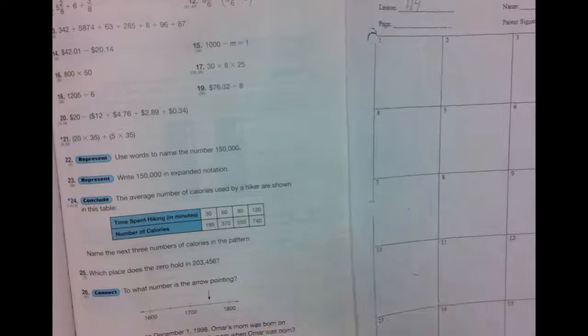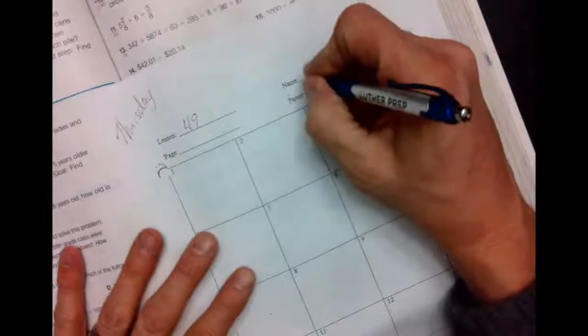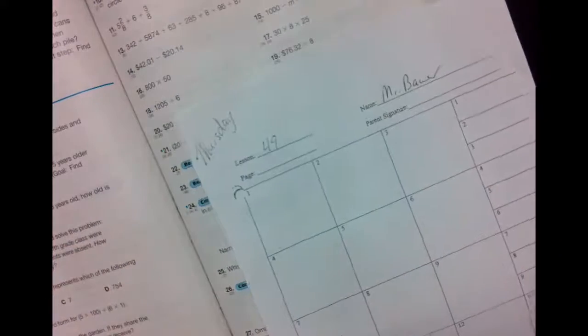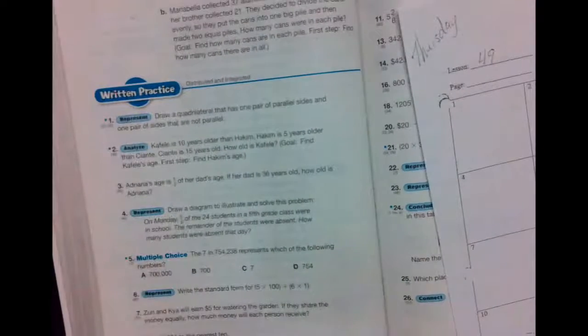Alright guys, lesson 49. Let's start with our name at the top. Today we're going to start at the front. We're shooting for six.